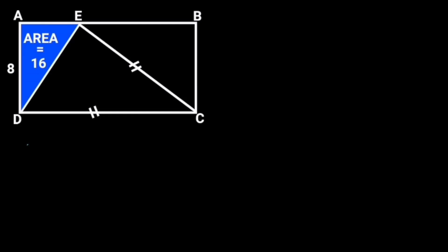In this figure, the area of triangle ADE is 16 square units. If the length of AD is 8 units, and the length of CD is equal to the length of CE, find the area of the rectangle.